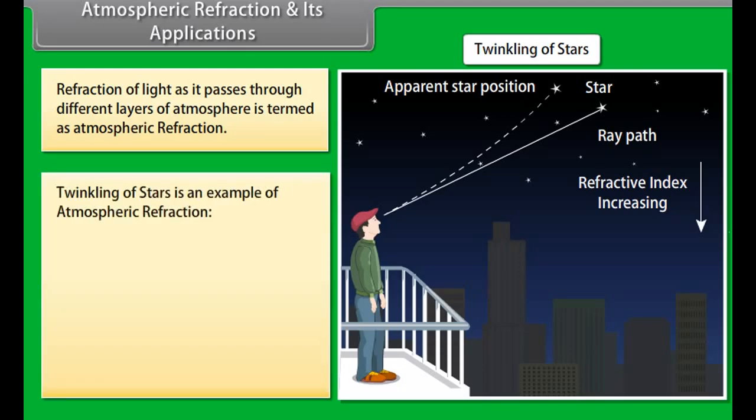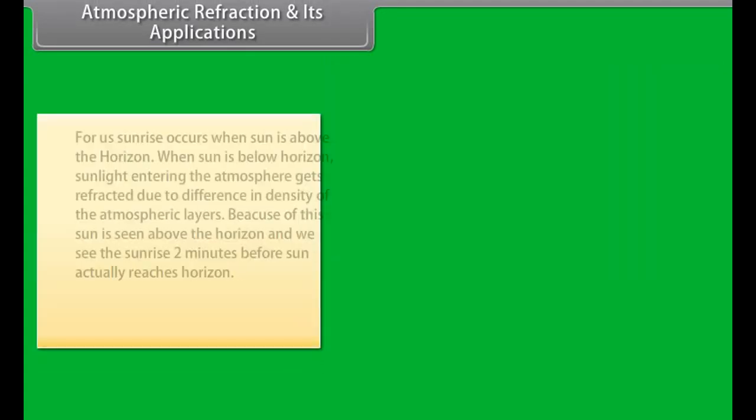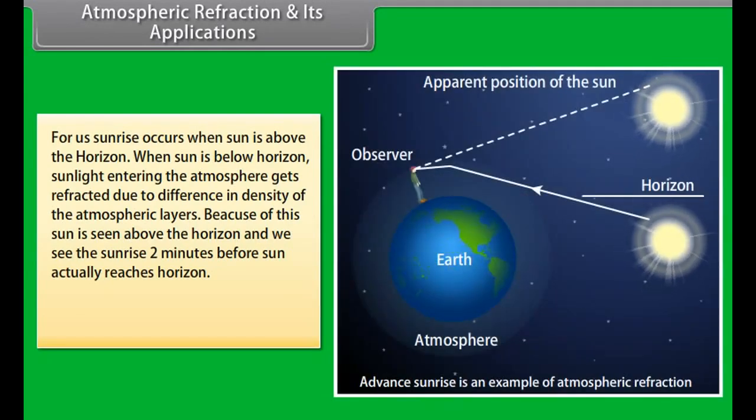Our atmosphere is not uniformly dense at any local place. Depending on the local condition, it may have hot and cool air near the ground. Hot air is lighter than cooler air and hence has lesser refractive index than cooler air. Due to this, starlight or sunlight entering the atmosphere undergoes refraction. This is known as atmospheric refraction.